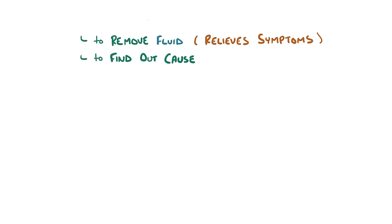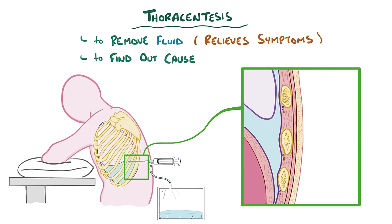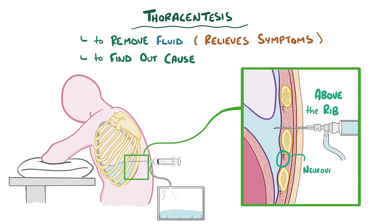To get rid of the pleural effusion fluid — both to relieve symptoms and to find out the cause — a thoracentesis can be done. In thoracentesis, a hollow needle to drain the fluid is carefully inserted over the top of a rib to avoid injuring the neurovascular bundle running along the underside of each rib.